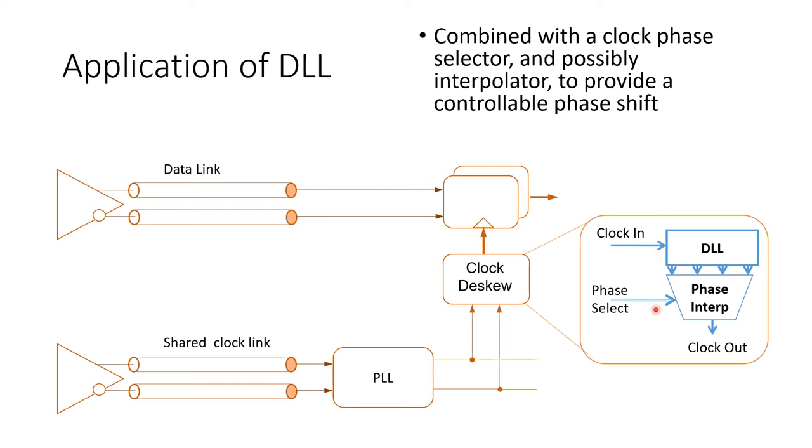If you want finer time resolution than that, you'll often see the many clock phases coming out of the DLL applied to what's called the phase interpolator, which selects any two neighboring phases from the DLL according to some phase select control words and can even interpolate between those phases. And the circuitry required to do that is obviously quite critical.